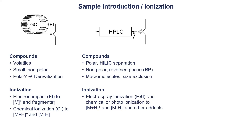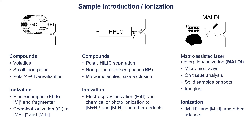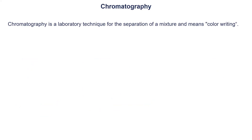HPLC uses soft ionization with ESI. Here we mostly see M+H or other adducts like sodium or ammonium, depending on what is also present in your solvent. And then we have MALDI, which is a very nice technique where you can use your tissue sample directly and analyze it on the section. Here the ionization is also soft, so we also see M+H adducts and maybe other adducts depending on the matrix you have in your tissue itself.